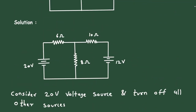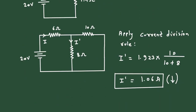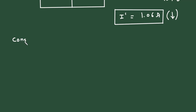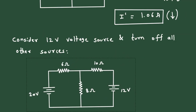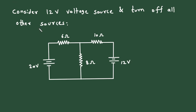Next, we consider the 12 volt voltage source and turn off all other sources. We are turning off the 20 volt voltage source. When we turn off a voltage source, it will be short circuited. This time the current through the 8 Ohm will be I double prime.